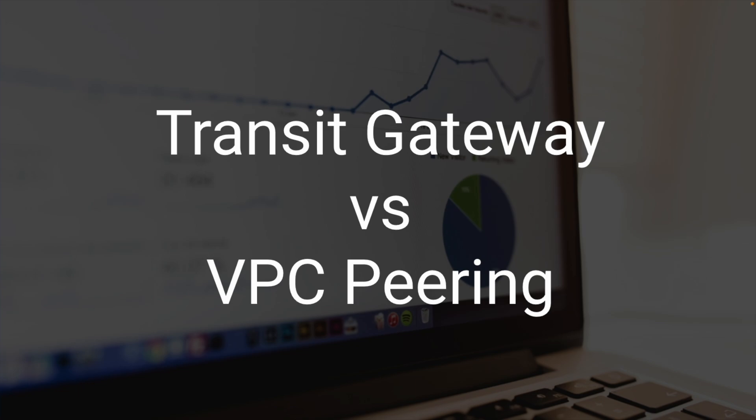In this video we'll be doing a comparison between Transit Gateway and VPC Peering. Both are used in AWS for creating a network connection between two VPCs. These two VPCs can be in the same account or different accounts, and similarly they can be in the same region or in different regions.